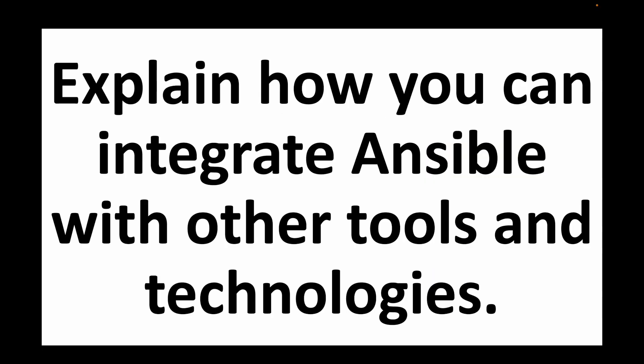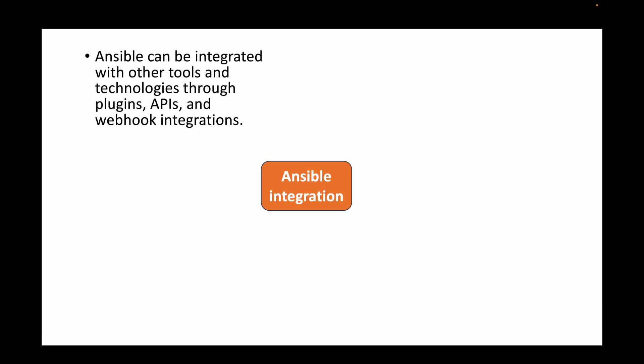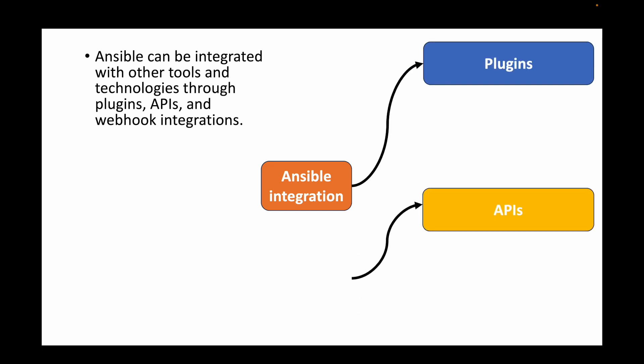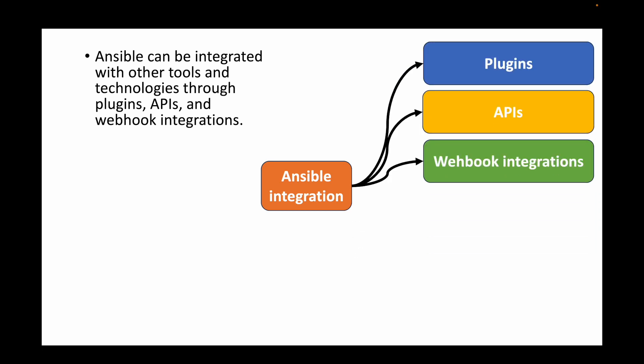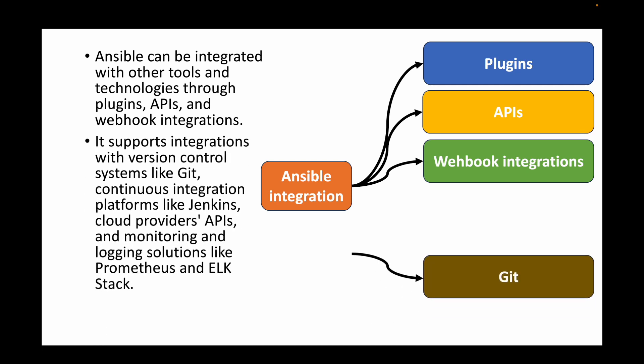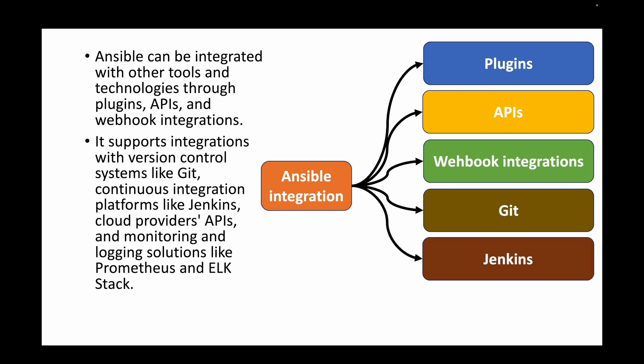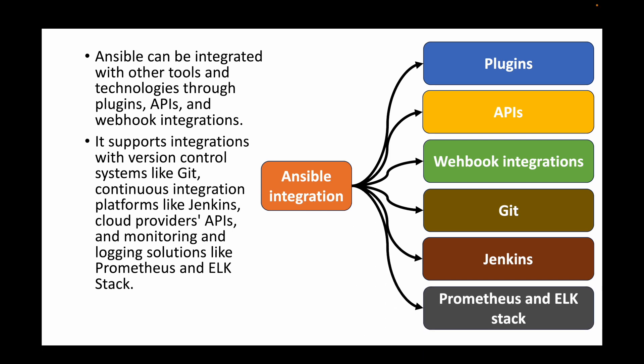The final question is: how can you integrate Ansible with other tools and technologies? Ansible supports integration through plugins, APIs, and webhook integrations. You can integrate it with version control tools like Git, CI platforms like Jenkins, cloud provider APIs, and monitoring and logging solutions like Prometheus and the ELK stack. These integrations make Ansible automations more powerful and comprehensive.